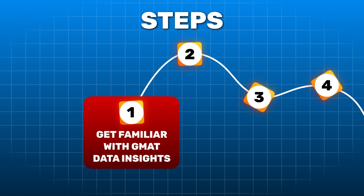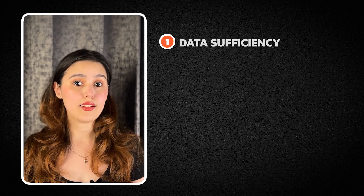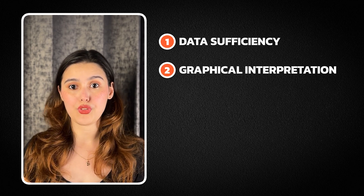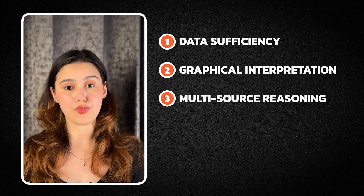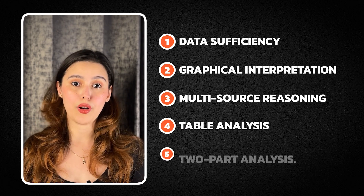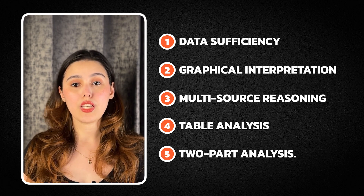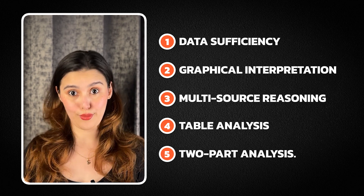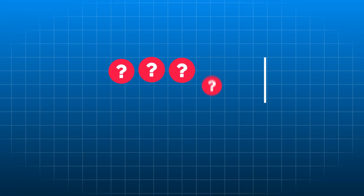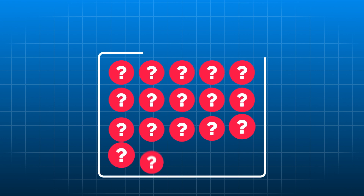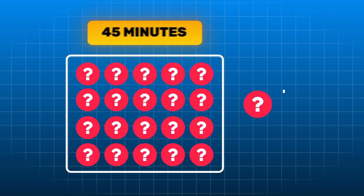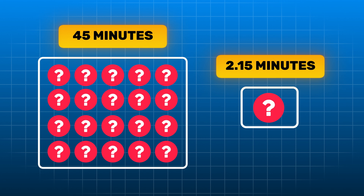Step 1: Get familiar with GMAT Data Insights. The data insights section includes topics like data sufficiency, graphical interpretation, multi-source reasoning, table analysis, and two-part analysis. Knowing how to approach each section is a challenge in itself. This section consists of 20 questions, which you need to complete in 45 minutes. That's about 2.15 minutes per question, so you cannot miss but have great time management.